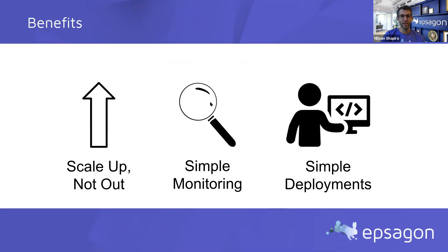The benefits of having a simpler architecture: it's very simple. You can very easily understand what's happening, where you deployed, how to monitor it. It's very clear to see what scale means — it's only more compute power to the server usually. However, there is a reason the world has gone into microservices.